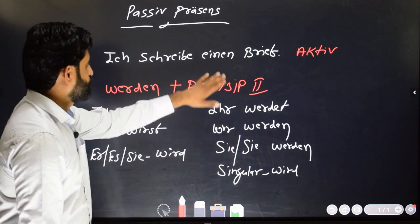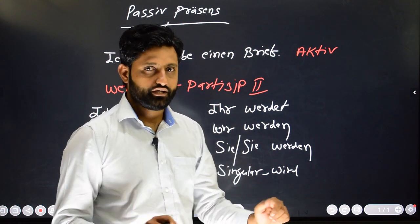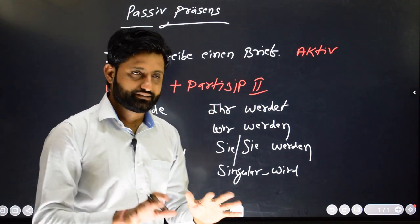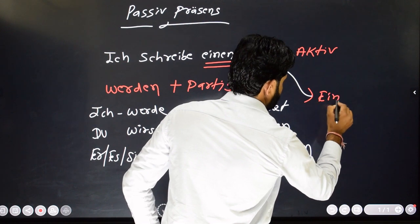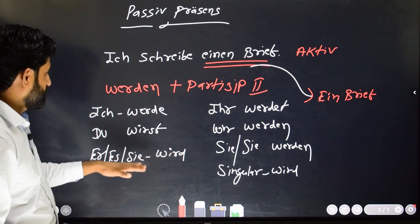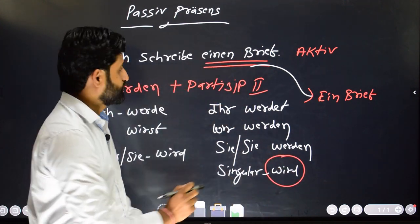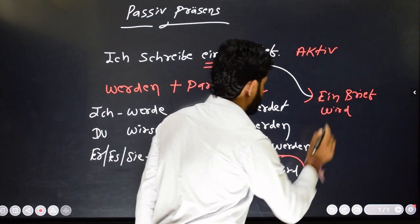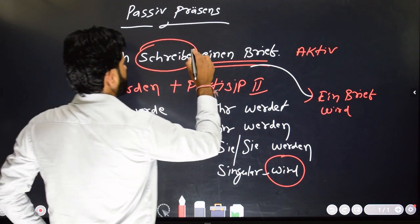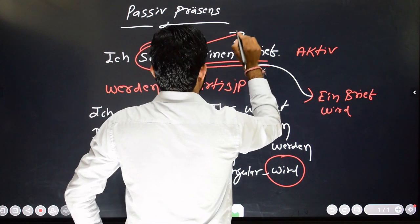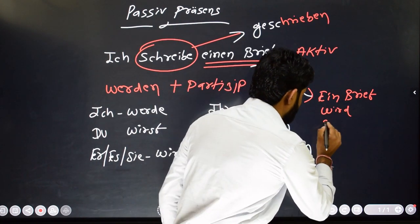So what do we need to do? We just need to identify what was the subject and what was the object. In passive voice, the action will be more important and the subject — the person who was doing the task — will be less important. We just bring the object as subject. So here you need to identify which form of 'werden' will be used with 'einen Brief.' 'Ein Brief' is singular, so we need 'wird.' So 'Ein Brief wird' and then the Partizip II of the verb — the verb is 'schreiben' and the Partizip II is 'geschrieben.' So: 'Ein Brief wird geschrieben.'